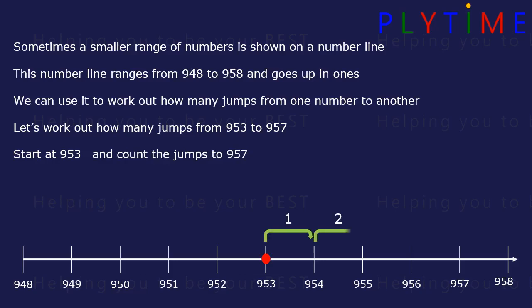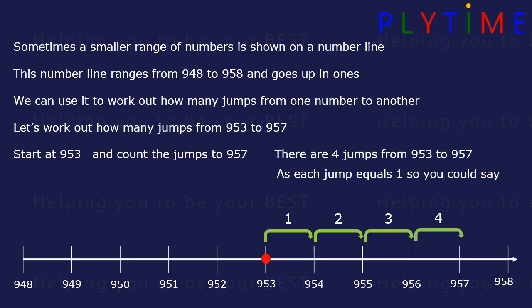1, 2, 3, 4. Or 4 jumps to 957. As each jump equals 1, we could say 953 plus 4 equals 957. Or 957 minus 4 equals 953.